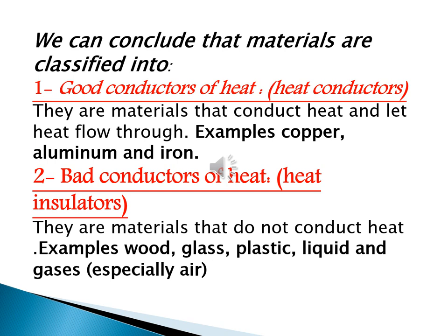Let's know what's meant by good conductors of heat. They are materials that conduct heat and let heat flow through them, such as copper, aluminium, iron, and all metals. And what's meant by bad conductors of heat, or heat insulators? They are materials that don't conduct heat, such as wood, glass, plastic, liquids, and gases — especially air.